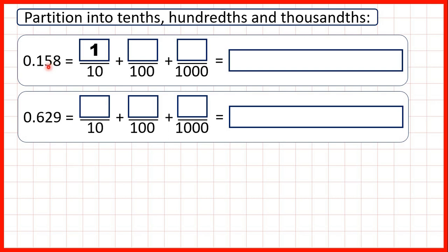The second digit after the decimal point is the hundredths digit, so that's five hundredths. And the third digit after the decimal point tells us how many thousandths we have, so we have eight thousandths.